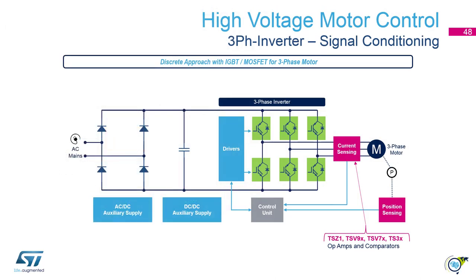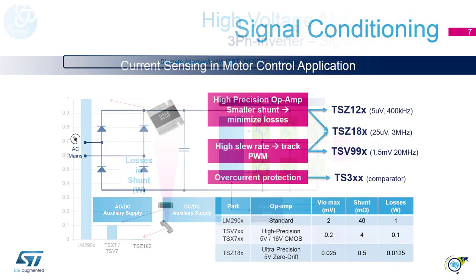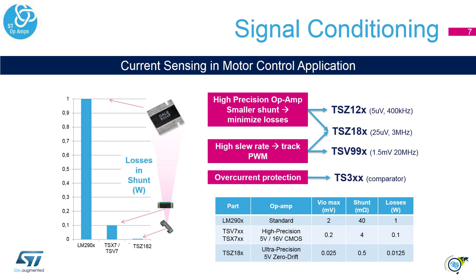Let's move to signal conditioning. ST offers specialized signal conditioning for current sensing using shunts. For economic designs, ST offers standard op-amps such as LM290X. The losses for current sensing can be optimized using high precision op-amps such as TSV7 or TSX7. If power losses are key, use the ultra-precision op-amp TSZ18 series, which allows a reduction of losses by 99% versus the standard op-amp.